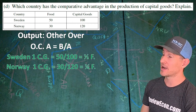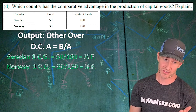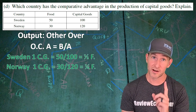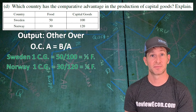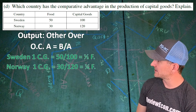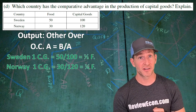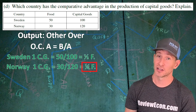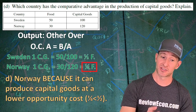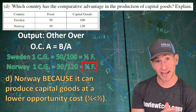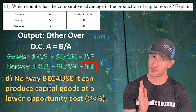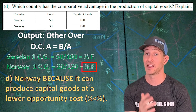For Norway, the opportunity cost of one capital good is 30 units of food divided by 120 units of capital, which gives us one fourth of a unit of food per capital good. Comparative advantage is the ability to produce something at a lower opportunity cost. Comparing one half versus one quarter, Norway has the lower opportunity cost at one quarter of a unit of food per unit of capital produced. So we identify Norway and explain using the math: one fourth is less than one half, so Norway can produce capital goods at a lower opportunity cost. That gets you your points.